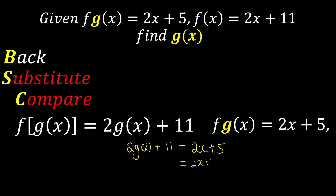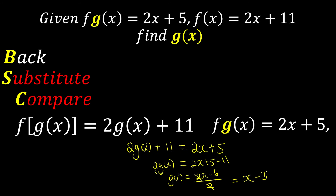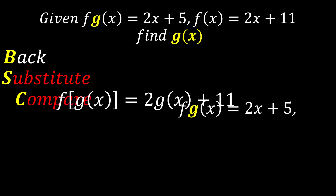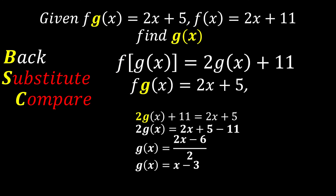So we have: 2g(x) = 2x plus 5 minus 11, which gives 2g(x) = 2x minus 6. Dividing both sides by 2: 2 divided by 2 is 1, and negative 6 divided by 2 is negative 3. Therefore g(x) = x minus 3. That's how you find the back function — the neat solution is done.